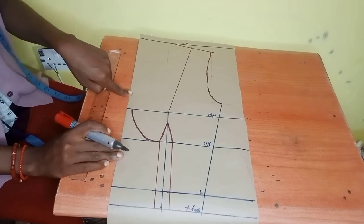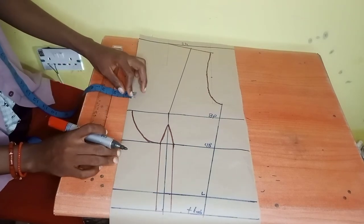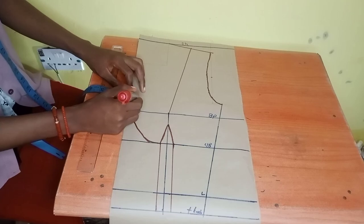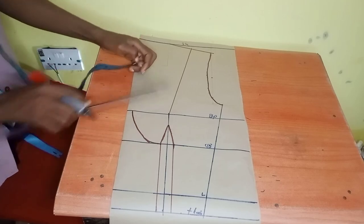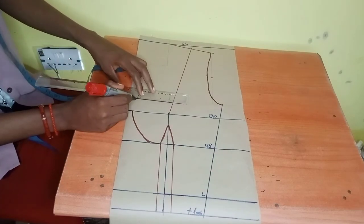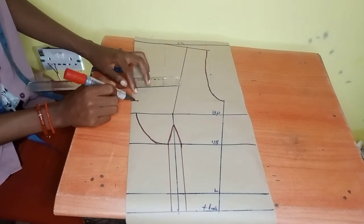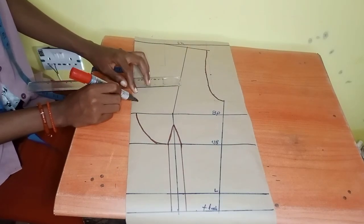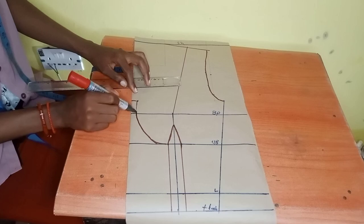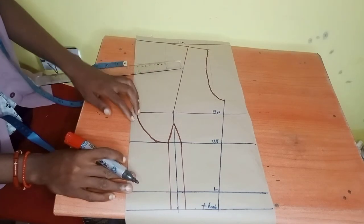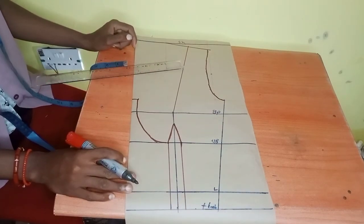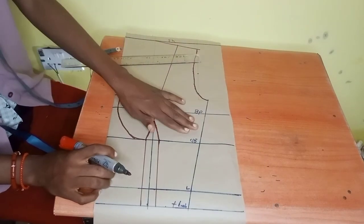Then for the neckline, I went up by one and a half. You can go by one inch or even half inch depending on what you want, how deep you want it to be. Then I went out by half an inch like so, and I just connected it to my bust circumference. Now we are done creating the bust region for the center front. Let's now go to the side front and create the same thing.